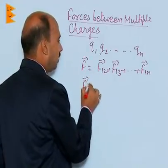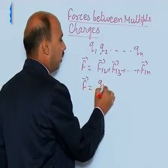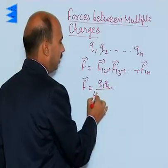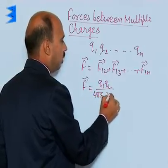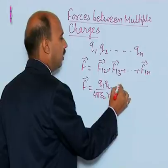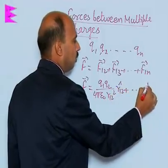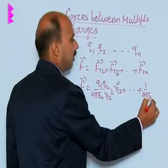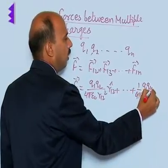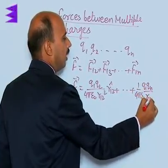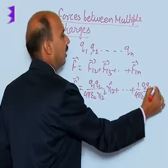We can write here also F is equal to Q1 Q2 divided by 4 pi epsilon naught R12 square R12 unit vector plus 1 upon 4 pi epsilon naught Q1 Qn divided by R1n square R1n unit vector.